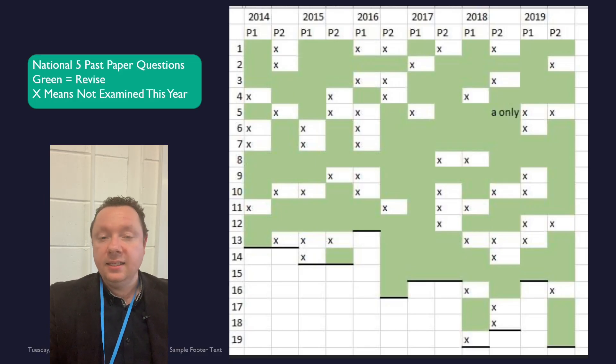One last bonus. Here is an analysis of all the National Five past papers from 2014. Everything in green you can do. Anything being crossed out, you don't have to do, it's not in this year's exam.